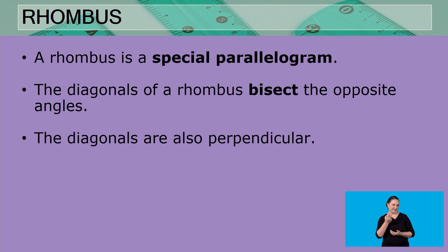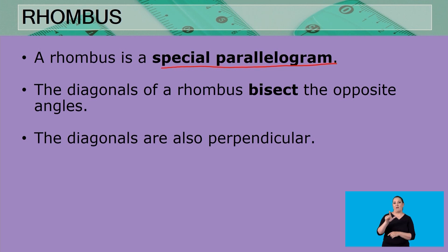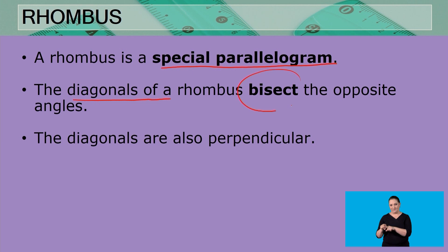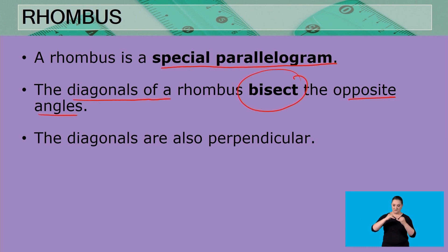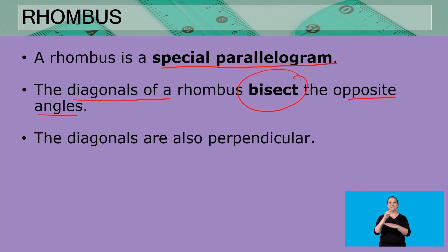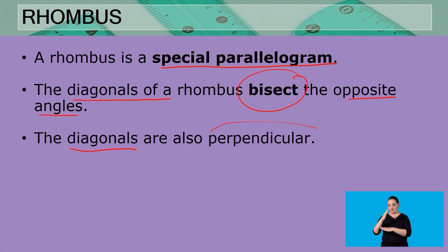Since a rhombus is a special parallelogram, all of the properties of a parallelogram apply to a rhombus as well. The diagonals of a rhombus bisect the opposite angles. With a parallelogram, opposite angles were equal, but with a rhombus, the diagonals bisect those opposite angles. Another property of the diagonals is that they are perpendicular to each other.